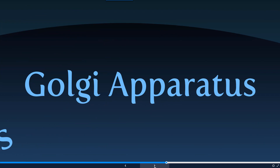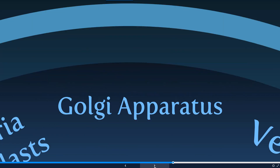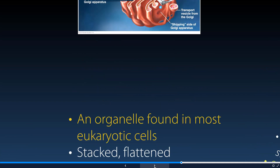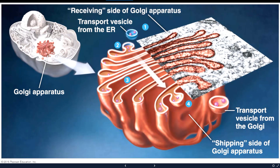The Golgi apparatus is another important organelle found in most eukaryotic cells. It has membranes, tubes, and structures that it uses to sort and package proteins and other substances, then ships them off — it's like a FedEx. The Golgi apparatus receives proteins on one end, processes and packages them, and ships them off at the other end to wherever they need to go — whether to the cell membrane for export outside the cell, or to some other location within the cell.